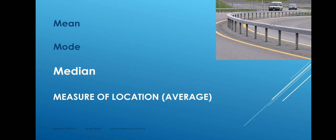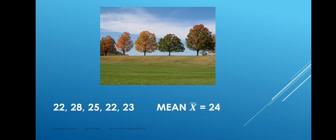Having said all this, the mean is still our favourite measure of location. When we calculate a sample mean, we add together all the numbers and divide by the sample size. So if our numbers are 22, 28, 25, 22, and 23 — the heights of five trees in metres — we add those numbers together, divide by five, and that gives us a mean of 24. The sample mean, represented by the symbol X-bar, is 24.